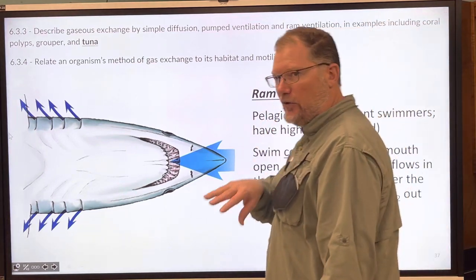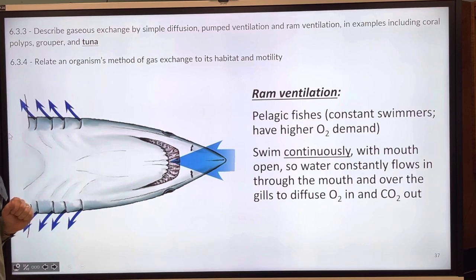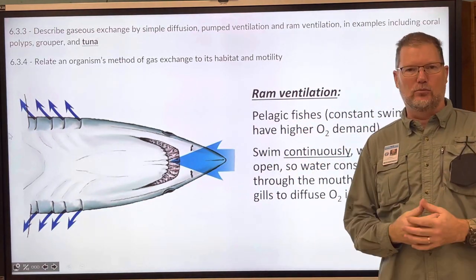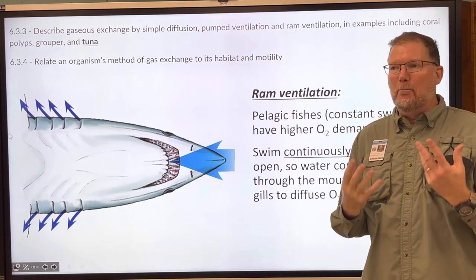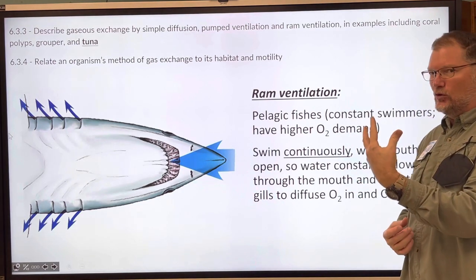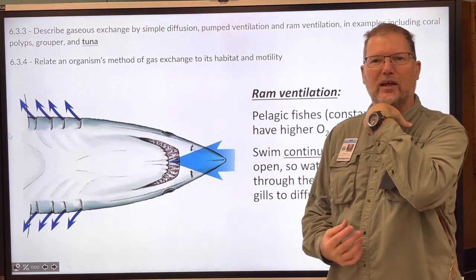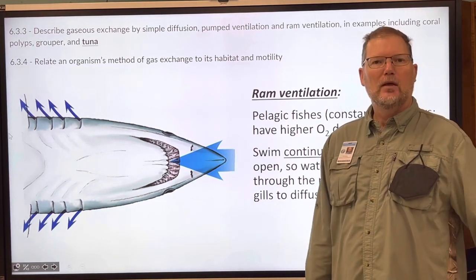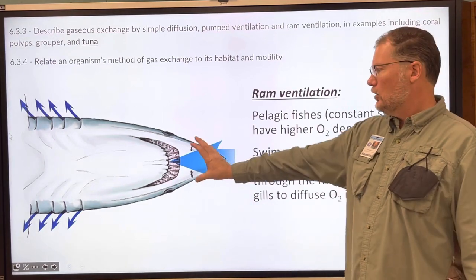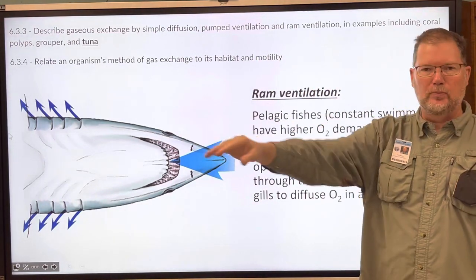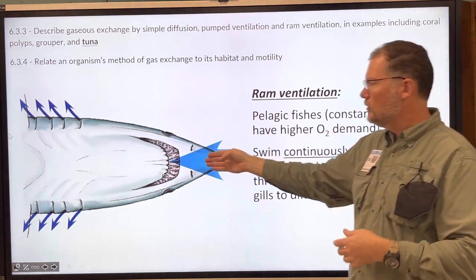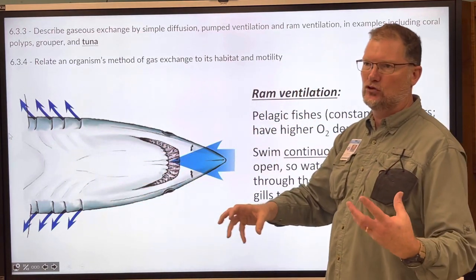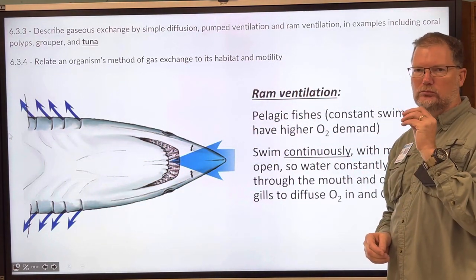On the other hand, you have ram ventilators — ram as in ramming forward. These fish are essentially constant movers because if they stop, they'll drown. Think about having to constantly move to force air into your lungs. That's the lives of fish like sharks and tuna — they have to constantly swim to push water in through their mouth and over their gills. Sharks in particular don't have an operculum, which relates to why pump ventilation won't work for them.